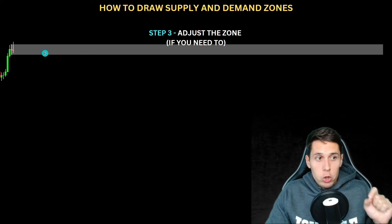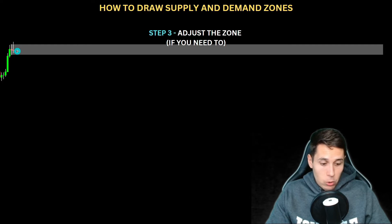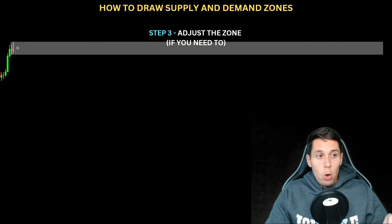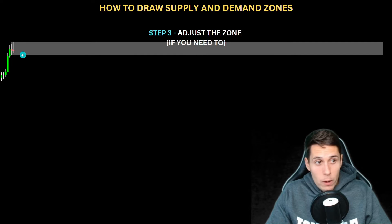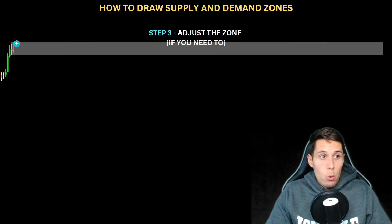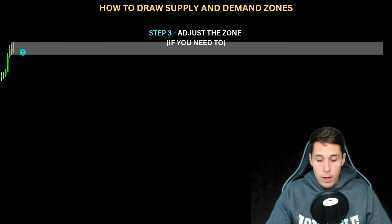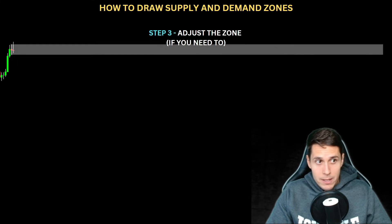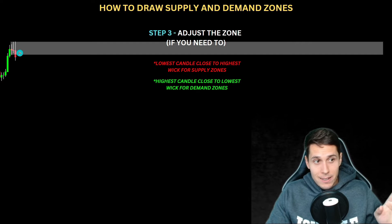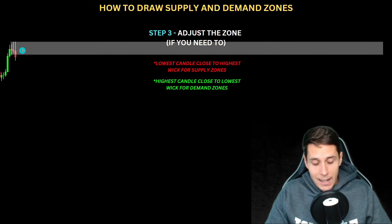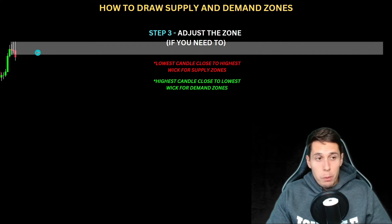Step number three: adjust the zone if you need to. In some cases you won't have to adjust it. To adjust the zone, you wait for more candles. For example, here we got another ranging candle — it closed within the previous candle, not above or below. So what we do is adjust the zone to the highest or lowest point of this wick. Since this wick extends to the upside, we drag the zone upward. You wait for the next candle — and in this case, it's a trending candle, so now we know this is going to be a supply zone.